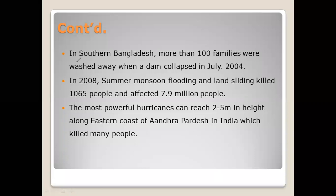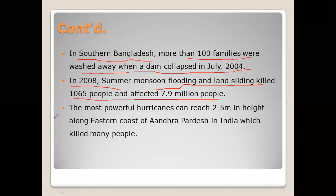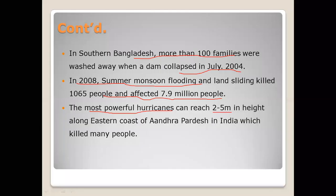He mentioned from history that in southern Bangladesh more than 100 families were washed away when a dam collapsed in July 2004. In summer 2008, monsoon flooding and landsliding killed 1,065 people and affected 7.9 million people. The most powerful hurricanes can reach 2 to 5 meters in height along the eastern coast of Andhra Pradesh in India, which killed many people.